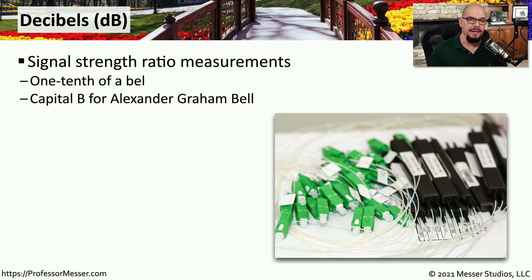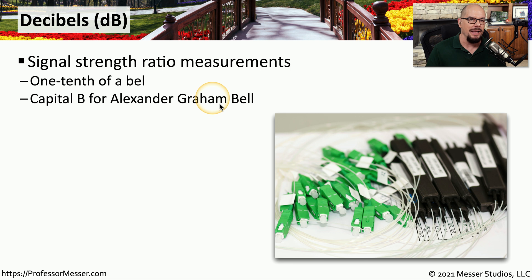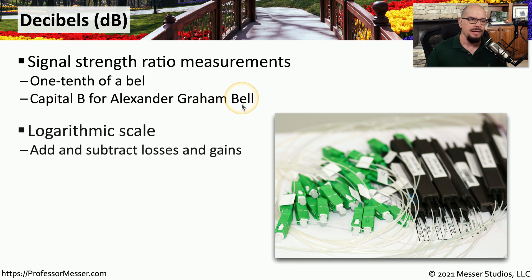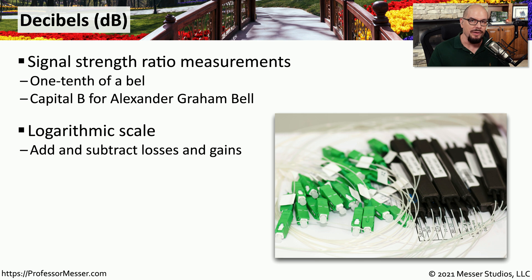We often refer to the measurement of that signal as a decibel, or dB. A decibel is technically one tenth of a bell — that is a capital B in decibel — and the capital B stands for Alexander Graham Bell. This is a logarithmic scale, which means the scale varies widely as you extend it out over a longer distance, but you are able to add and subtract these losses and gains to get a final decibel value.